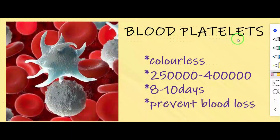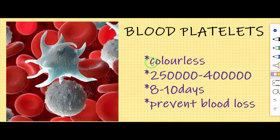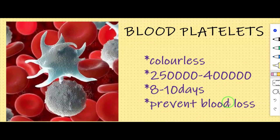Blood platelets, another name is thrombocytes. In the diagram you can identify RBCs (red blood cells), WBCs (white blood cells or leukocytes), and blood platelets. These platelets are small and colorless, and do not have a nucleus. 2,50,000 to 4,00,000 platelets are present in 1 cubic mm of blood. Their lifespan is 8 to 10 days. Their function is to prevent blood loss — platelets clot at the site of injury and prevent blood loss.